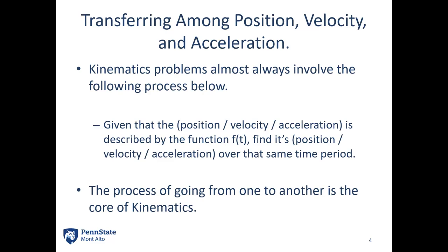Moving on, we're going to talk about what we most often do in kinematics. We are almost always going to have the following process: given some position, velocity, or acceleration over time as a mathematical function, we want to find the other two functions. If I'm given position, I might want to find velocity and acceleration over time. If I'm given acceleration, I might want to find position and velocity over time. The process of going back and forth between these functions is the core of what we do in kinematics.